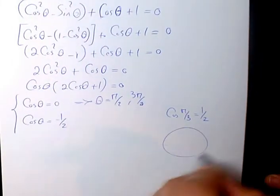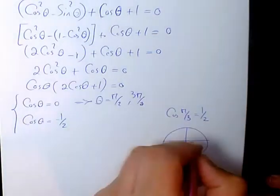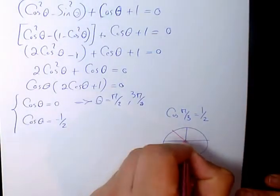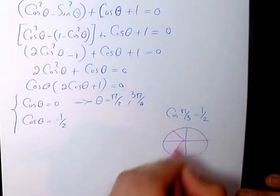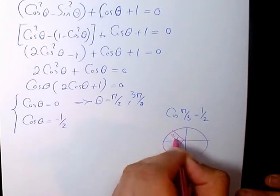We need to use the CAST rule to find out -1/2, which is going to be quadrant 2 and quadrant 3. π/3 and π/3.